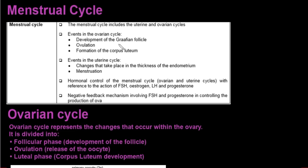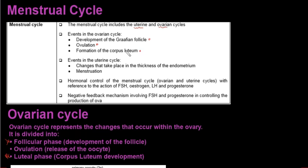In this video we'll be looking at the menstrual cycle, which includes the uterine cycle as well as the ovarian cycle. The ovarian cycle has three phases: the development of the Graafian follicle, also known as the follicular phase, then ovulation, and then formation of the corpus luteum, known as the luteal phase.